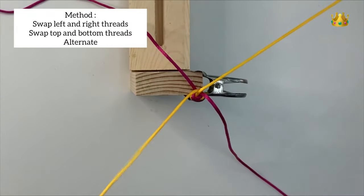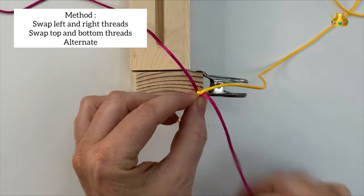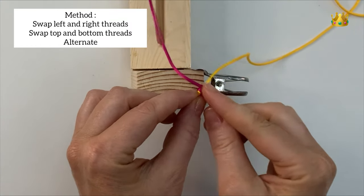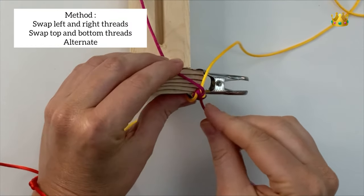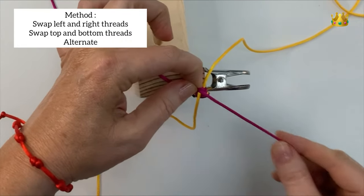The left goes over to the right, the right goes over to the left, and then the bottom one goes to the top and the top one goes to the bottom. All of your threads have been swapped. That's one full stitch there, so we just repeat this same process.